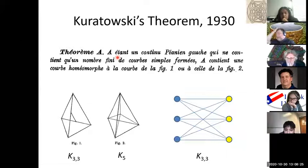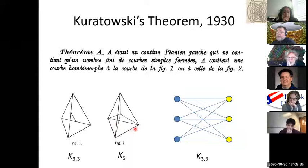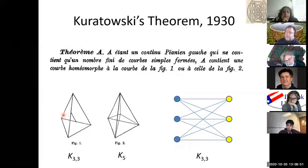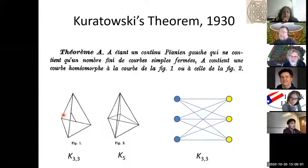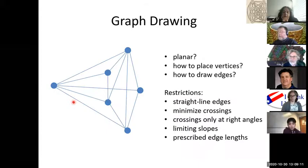This came together in Kuratowski's theorem published in 1930. The K5 and K33 are non-planar and they are essentially the only obstructions to planarity. You can draw the graph in the plane if it doesn't contain a K33 or K5 as a topological minor. This means we can actually recognize planar graphs relatively easily by just looking for these obstructions. That doesn't yet mean we can draw the graph in a plane — that's a different task, but there are algorithms for this.